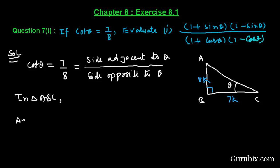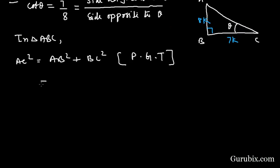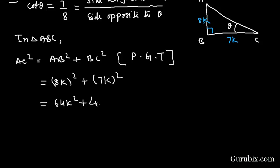Now we shall find the hypotenuse AC using the Pythagorean theorem. In triangle ABC: AC² = AB² + BC². Substituting, we get AC² = (8k)² + (7k)² = 64k² + 49k² = 113k².